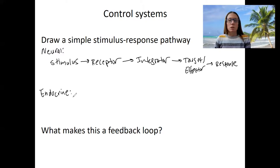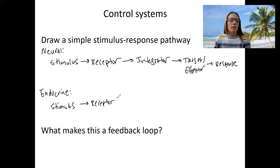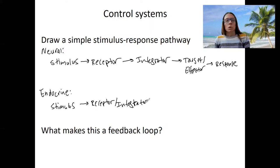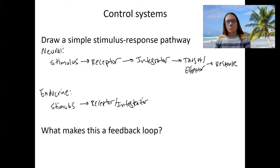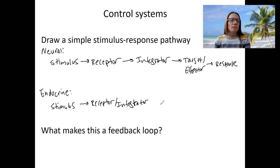For an endocrine stimulus response pathway, the endocrine system can also act as an integrator. However, the main difference is the receptor is often the same thing as the integrator — the thing that detects whatever variable we're talking about is also the thing that makes a decision. The pancreas is a good example: it detects blood sugar levels and produces a hormone to respond, either insulin or glucagon, depending on whether blood sugar is too high or too low. I'll label this the endocrine organ.